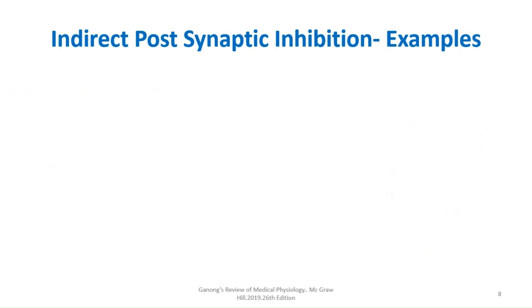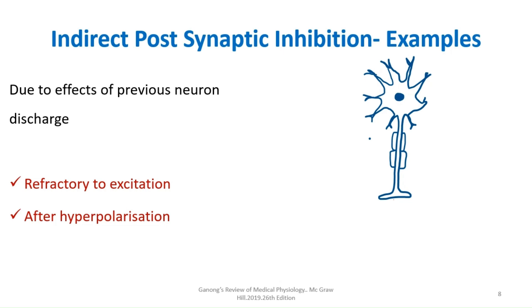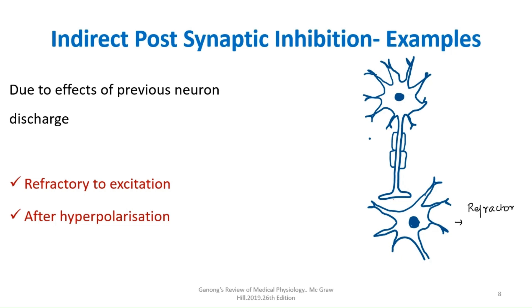Indirect postsynaptic inhibition occurs due to the effect of previous neuron discharge — the neuron is either in a refractory state or undergoing after-hyperpolarization. The neurotransmitter released is still an excitatory one, not GABA or any inhibitory transmitter. The problem is that the postsynaptic neuron is refractory to excitation or is after-hyperpolarized, so it cannot be stimulated. This is indirect postsynaptic inhibition.